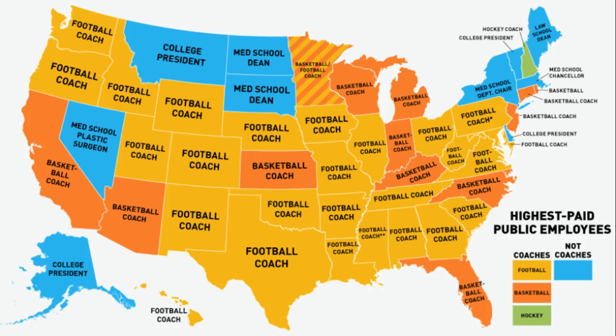Highest paid public employee — you can see where America's priorities are. Two college presidents, two med school deans, and then football coaches and basketball coaches. Congratulations. This is what's wrong with America in one graph, in my opinion.